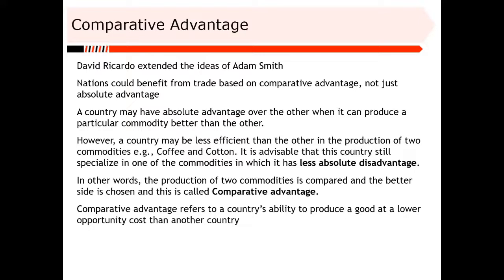David Ricardo extended Adam Smith's concept to what he called comparative advantage. While a country may have absolute advantage over others in certain areas — producing a commodity better than others — Ricardo argued that when you discover you have less absolute disadvantage in something, it is still advisable that your country specializes in producing that commodity.